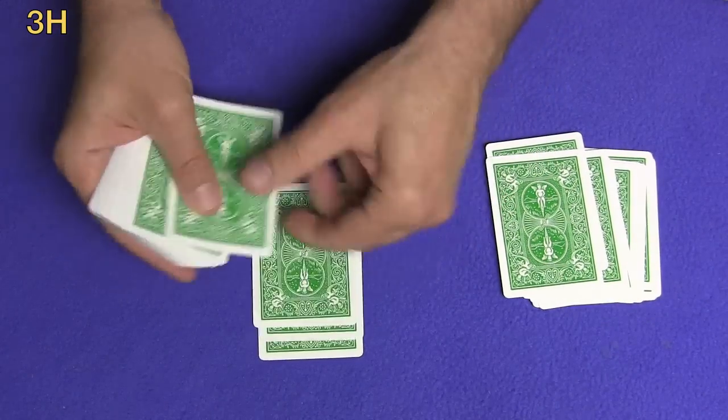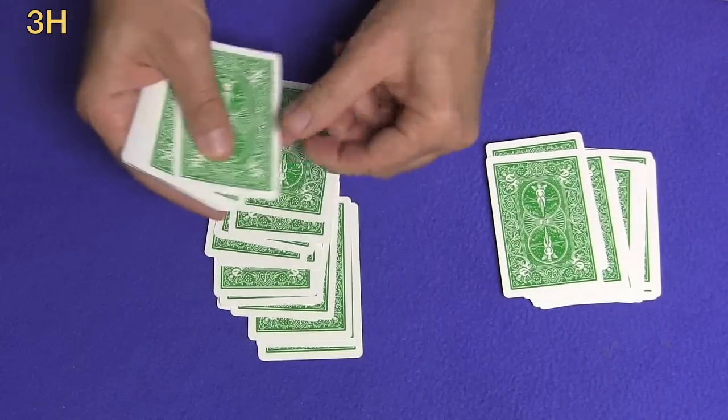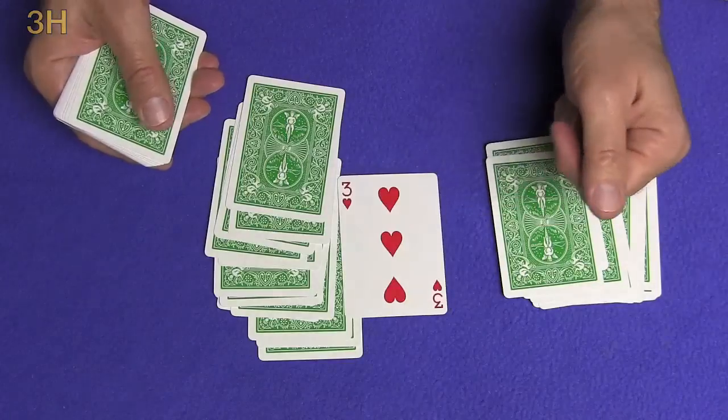So the 16th card down will be your card. So let's count. One, two, three, four, five, six, seven, eight, nine, ten, eleven, twelve, thirteen, fourteen, fifteen. And the 16th card is your three of hearts.